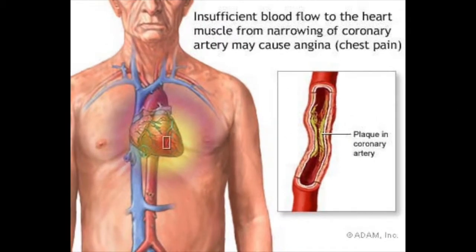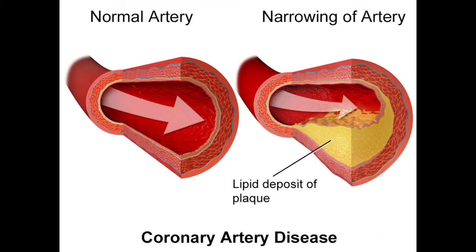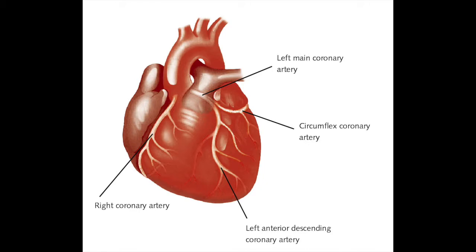Angina is a type of chest pain that is caused by inadequate blood flow to the heart. It is often a symptom of coronary artery disease, which is when arteries that carry blood to the heart become narrowed and blocked. Coronary arteries are on the surface of the heart and bring oxygen-rich blood to the heart muscle.